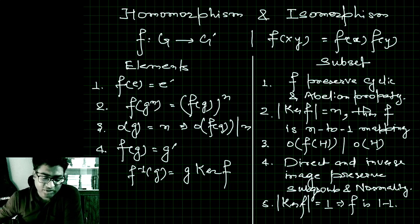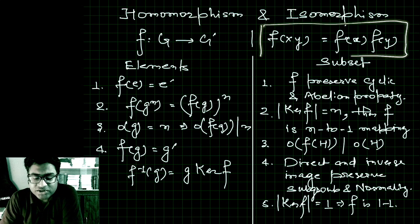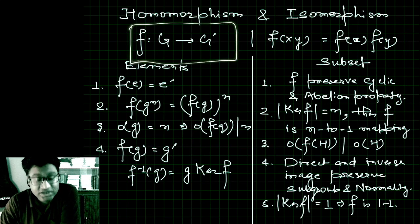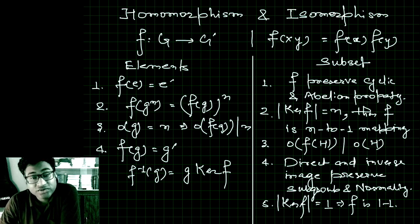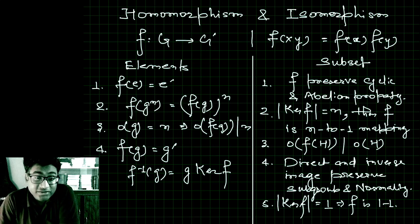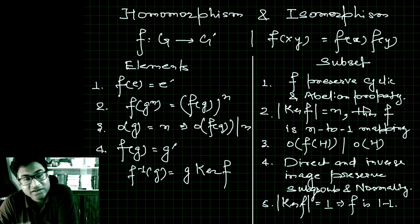We will start with some basic properties of homomorphisms. A homomorphism is a function between two groups G and G prime which preserves the operation. When f is a homomorphism between group G and G prime, there are many properties relating to elements and subgroups of G and G prime. The first property of elements is that identity always maps to identity. This is very important — if you find a map which does not map identity to identity, you can discard it; it is not a homomorphism.